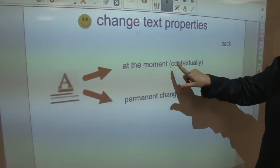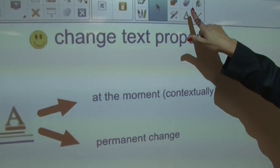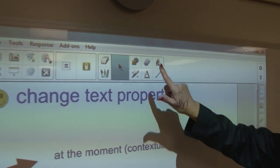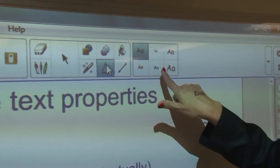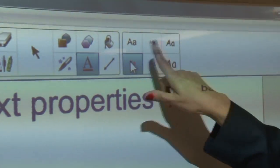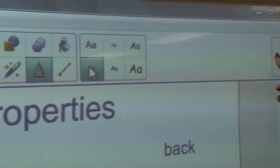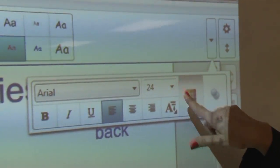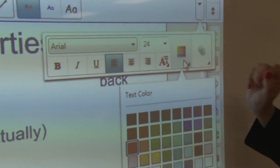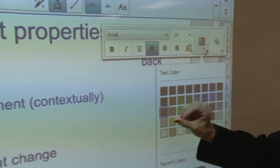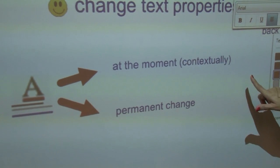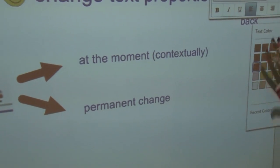At the moment, you can change text properties by pressing the A tool and then changing the text here to one of the six. If you don't like one of those six, you can change the font, size, and color over here, but that only changes it at the moment.